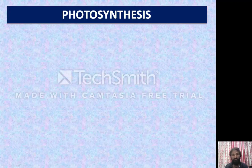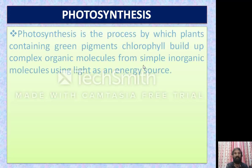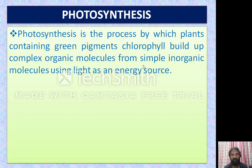Good afternoon, children. So in the previous class, we discussed about autotrophic and heterotrophic mode of nutrition with the examples in our textbook. So in this class, I am going to explain about photosynthesis. Photosynthesis means photo means light and synthesis means formation of different substances. In the presence of light, the plants are able to form different kinds of substances. That's why the process is called photosynthesis.